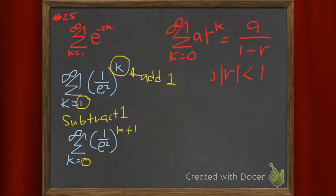Because this is going to get you the same series as above. But now I want to get my 1 over e squared to have a k power, not a k plus 1 power. So then I peel off a term.